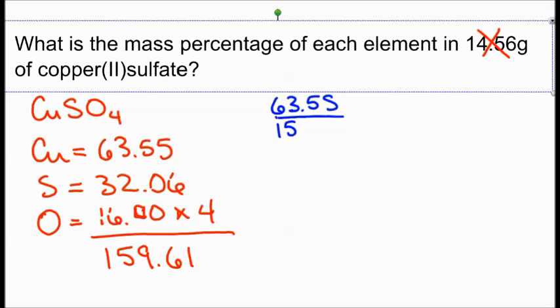63.55 grams per mole divided by 159.61 grams per mole times 100% will give us 39.82 percent copper.